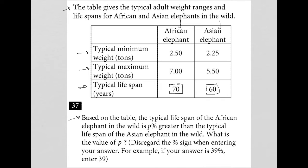So in essence, 60 plus some percentage of itself — so plus 60 times p over 100 — is equal to 70. So there's my equation.